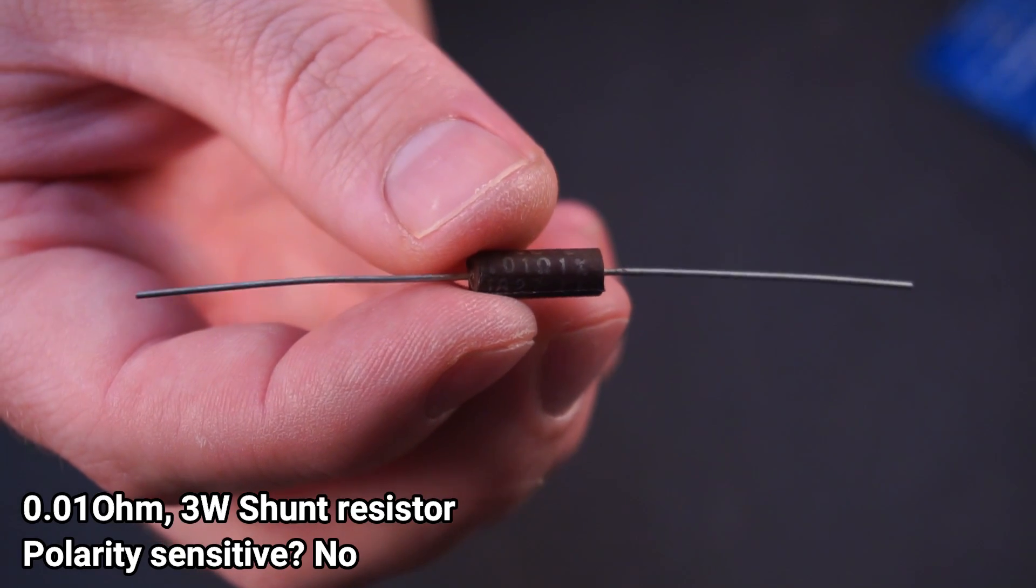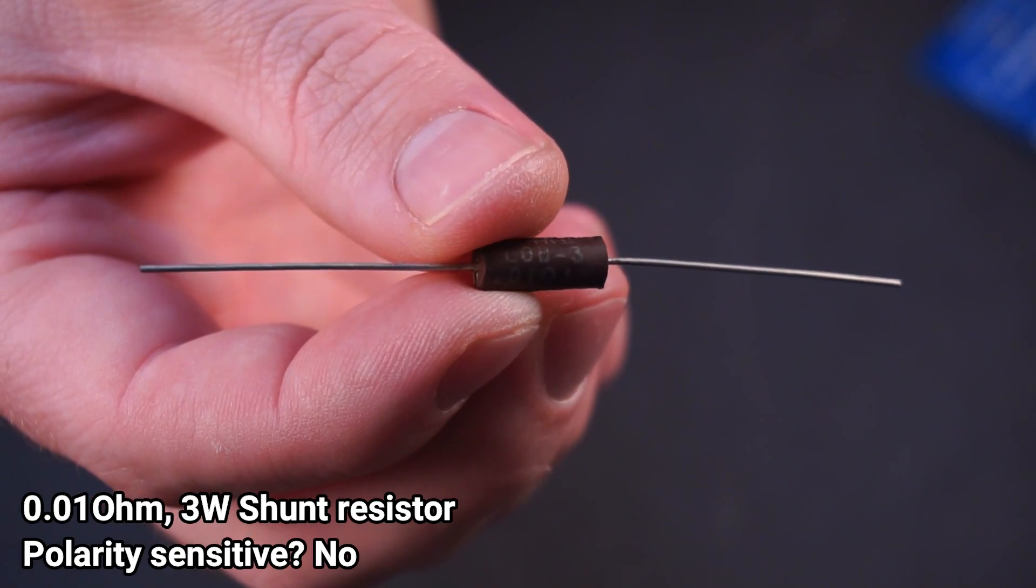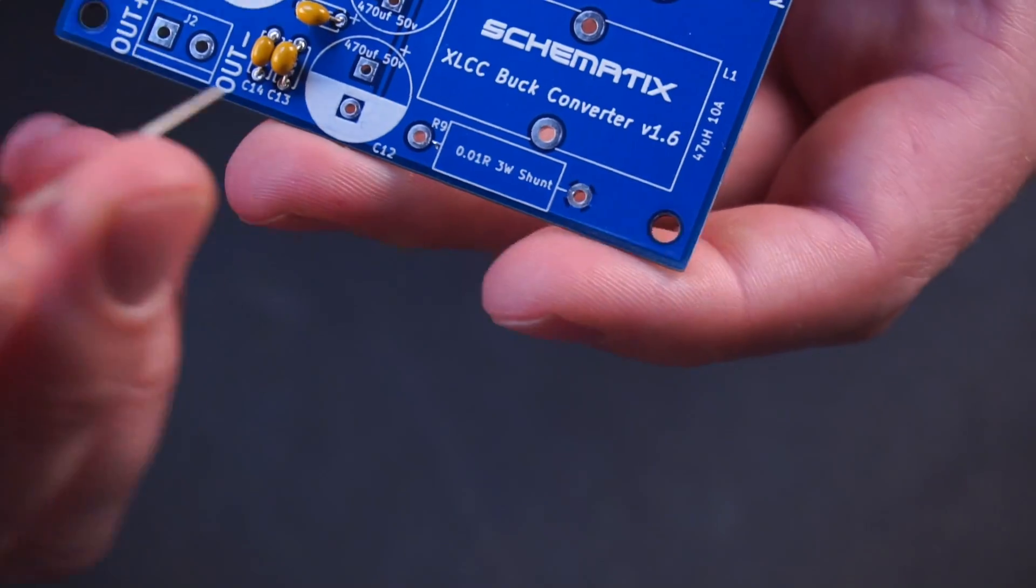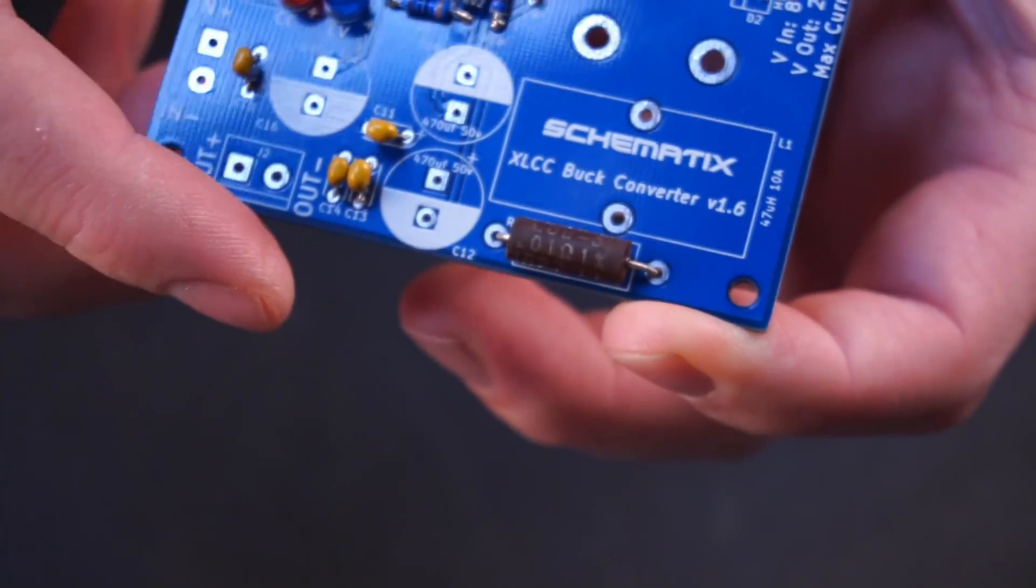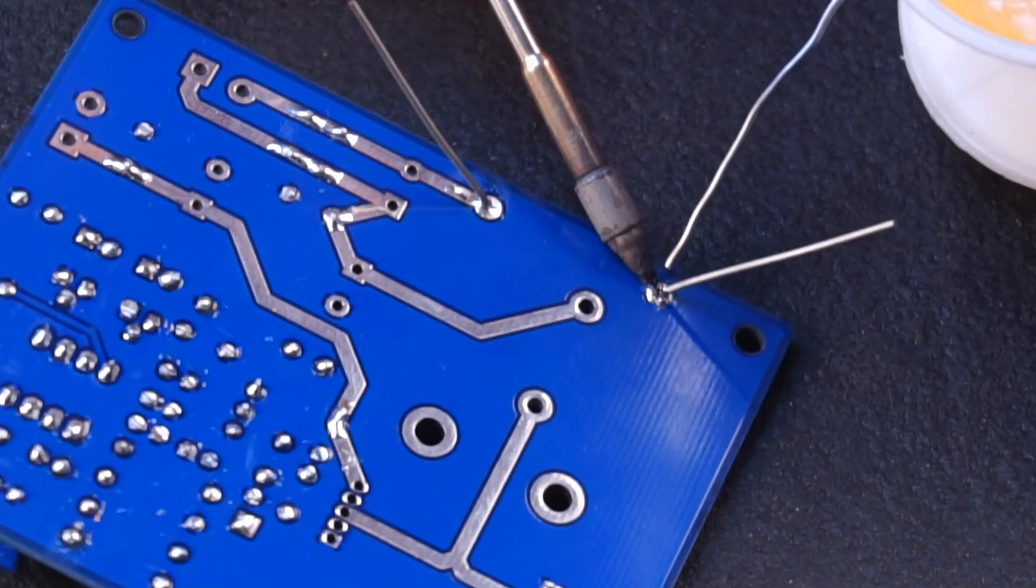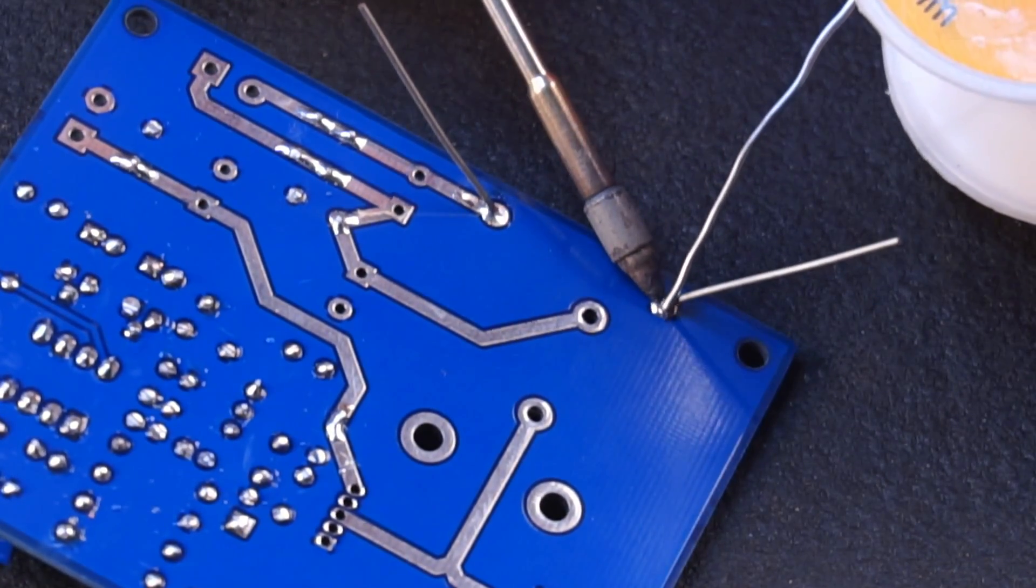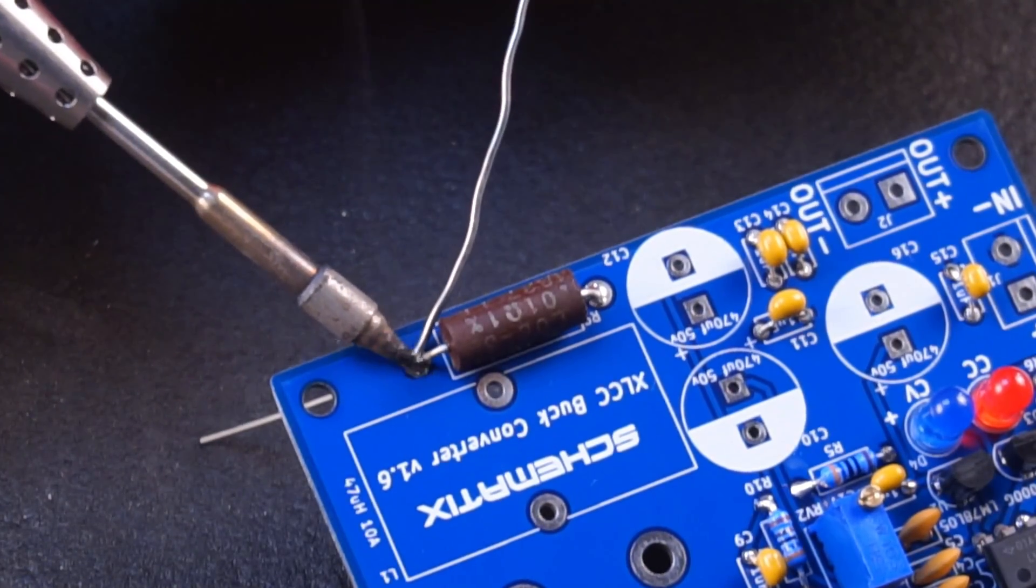Up next is the 0.01 ohm shunt resistor. Make sure you use plenty of solder when soldering the shunt to the board. This is a high current component so a good solder joint is essential here. I'd also recommend flipping the board over and soldering the shunt on the top side as well.